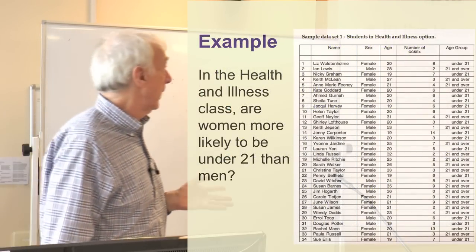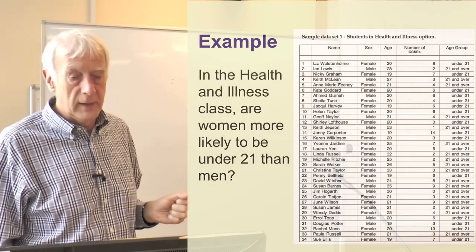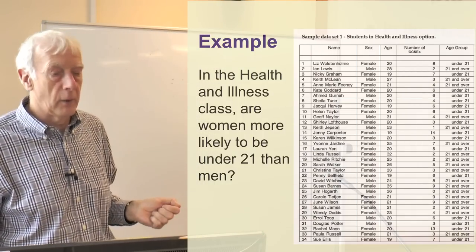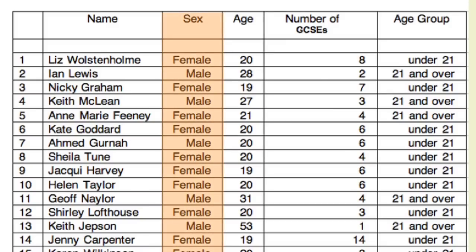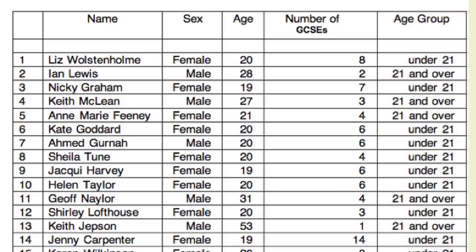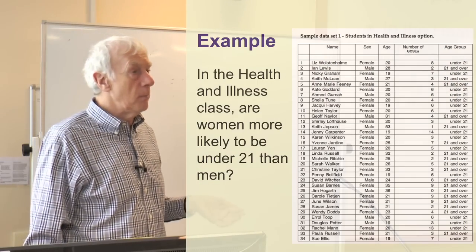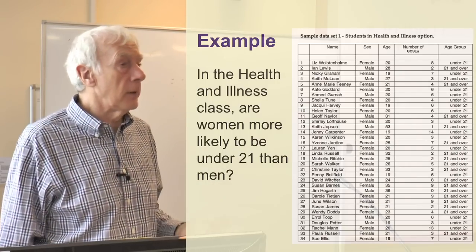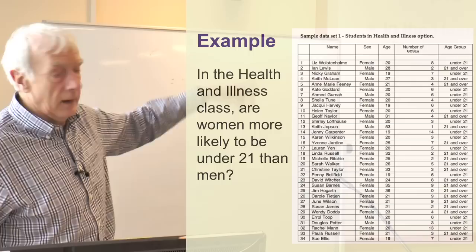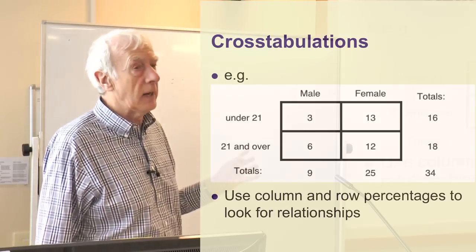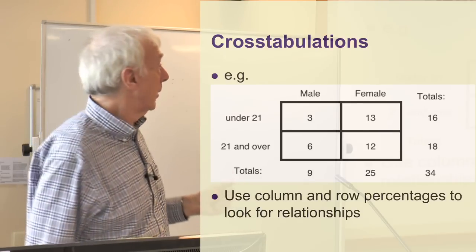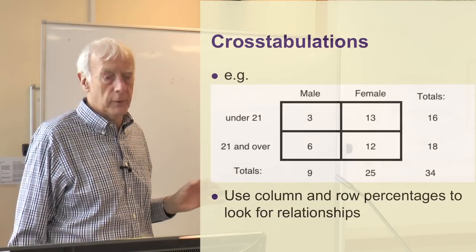Let's look at an example using a dataset I've used before — a small dataset from a Health and Innocence course, 34 individuals. I've got information on their gender and their age group, recoded into under 21 and 21 and over. The question I'm asking is: are women more likely to be under 21 than men? This is the simplest contingency table you can produce — a two-by-two table — with two columns for male and female, and two rows for the two age groups.